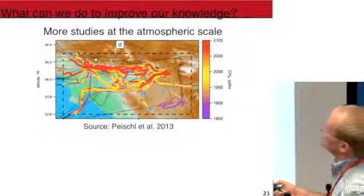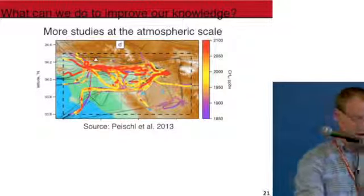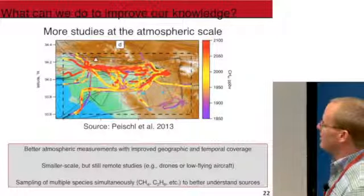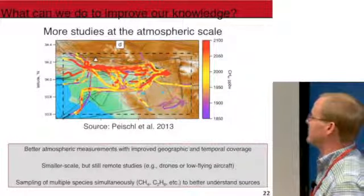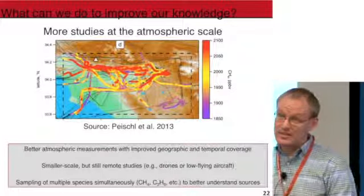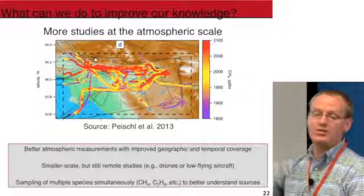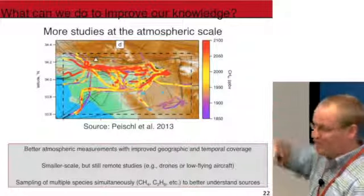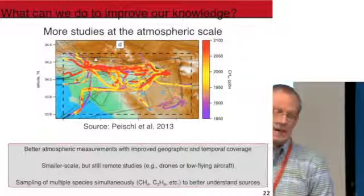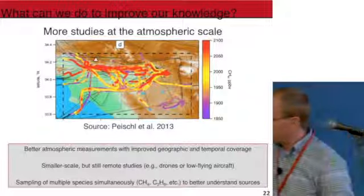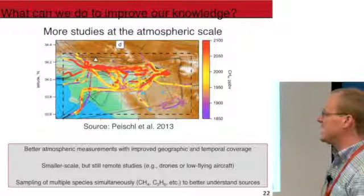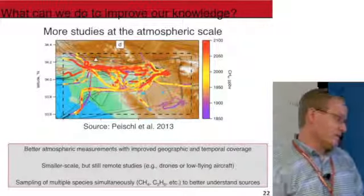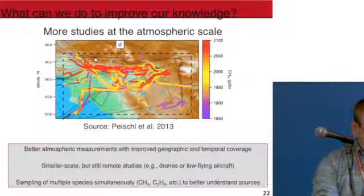We need more studies at the atmospheric scale. There are actively airplanes flying around — this is a very hot topic. We need better atmospheric measurements with improved geographic and temporal coverage. That Utah study had only a couple of usable days of flights, and flight time is very expensive. We need smaller-scale but still atmospheric studies — things like drones, so you can fly patterns cheaply and get lots of data over time. We also need to improve sampling of multiple species simultaneously, like ethane and propane, to distinguish cows and other biogenic sources from natural gas sources.